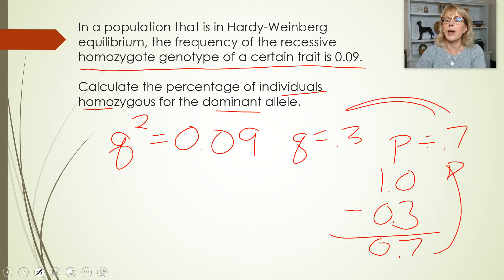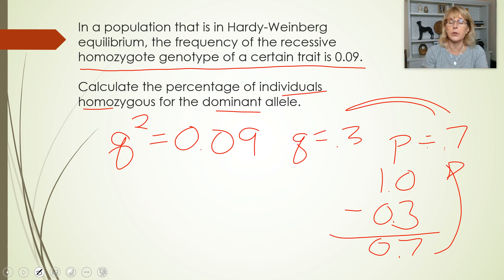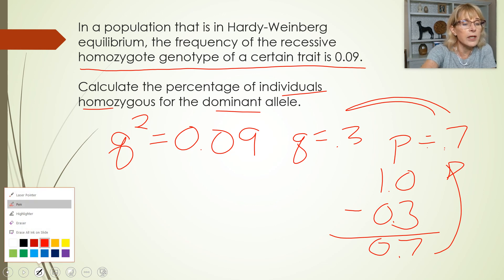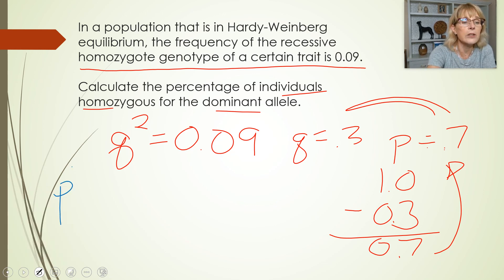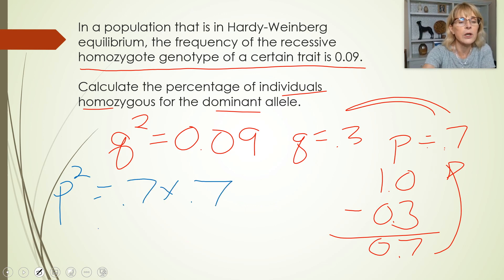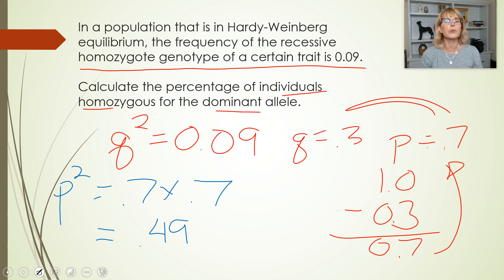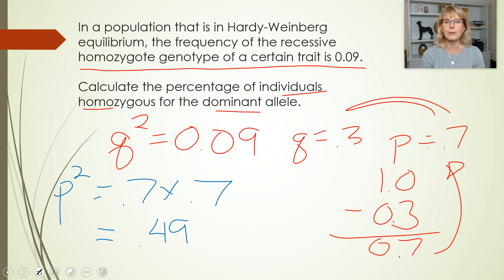Since q is 0.3, p equals 0.7, because those two together add up to 1. Now that we know p, we can find p², the frequency of homozygous dominant individuals. p² equals 0.7 times 0.7, which equals 0.49. So 49% of the individuals will be homozygous for the dominant allele.